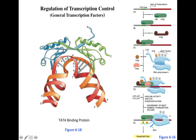The function of TATA binding protein is to untwist and relax the DNA — it bends the DNA so that the promoter region is exposed to the transcription machinery. Then transcription factor 2A is recruited upstream of TF2D, and transcription factor 2B is recruited downstream of TF2D, though TF2A is not clearly shown in this figure.